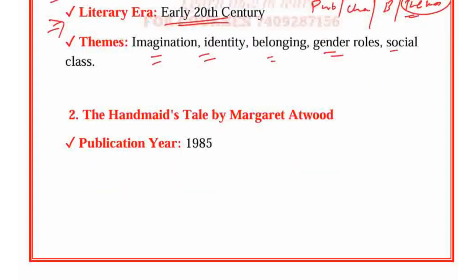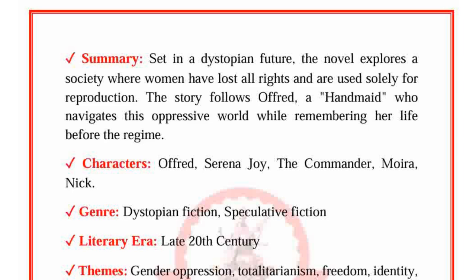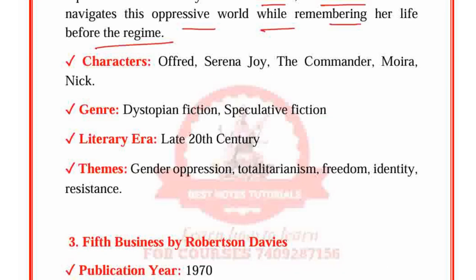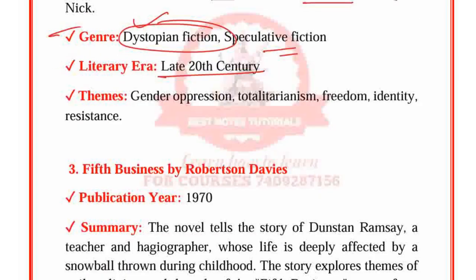The Handmaid's Tale is Margaret Atwood's work, published in 1985. Set in a dystopian future, the novel explores a society where women have lost all rights and are used solely for reproduction. The story follows Offred, a handmaid who navigates this oppressive world while remembering her life before. Characters: Offred, Serena Joy, The Commander, Moira and Nick. Genre: Dystopian fiction, Speculative fiction. Themes: Late 20th century, Belonging, Gender, Oppression, Totalitarianism, Freedom, Identity, Resistance.